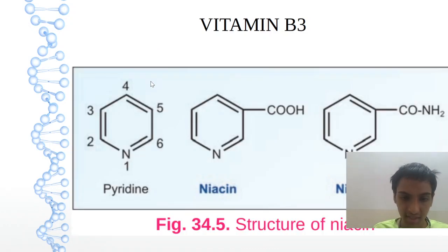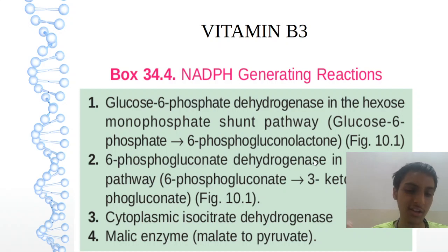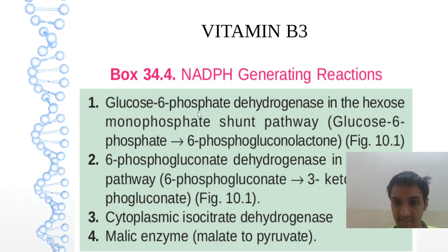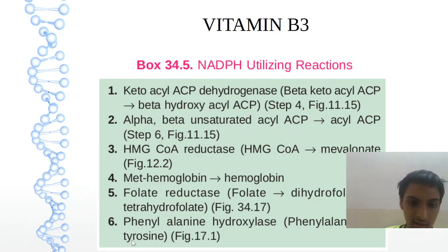Now we go to B3, which is niacin. Here we can see the niacin vitamin and the structure of NAD⁺. For reaction examples, in the HMP shunt pathway, glucose-6-phosphate is converted to 6-phosphogluconate by glucose-6-phosphate dehydrogenase — that is the first step of the HMP shunt pathway. Another example is malate to pyruvate by malic enzyme.